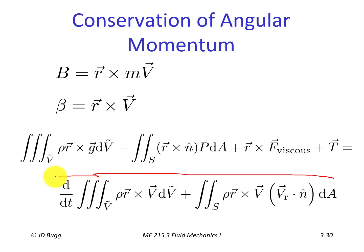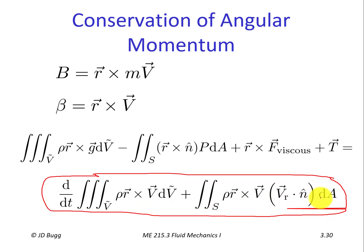Looking at the right-hand side of the equation, it is really analogous to linear momentum — it is exactly the same as linear momentum, except that each term has an r cross v in it instead of just v. The physical meaning of those terms is exactly the same, only referring to angular momentum rather than linear momentum. Everything we've learned solving linear momentum problems applies here; we just need to identify the position vector and take that cross product.